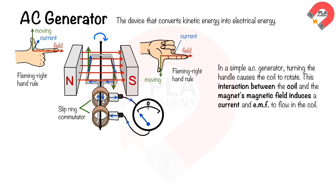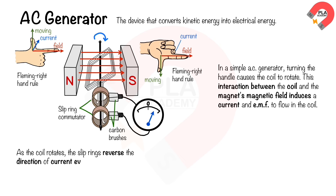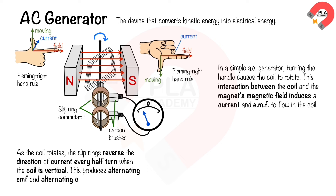The AC generator uses slip rings and carbon brushes making sliding contacts. As the coil rotates, the carbon brushes are at rest. The slip rings reverse the direction of current every half turn when the coil is vertical, producing alternating EMF and alternating current — the defining characteristics of AC electricity.